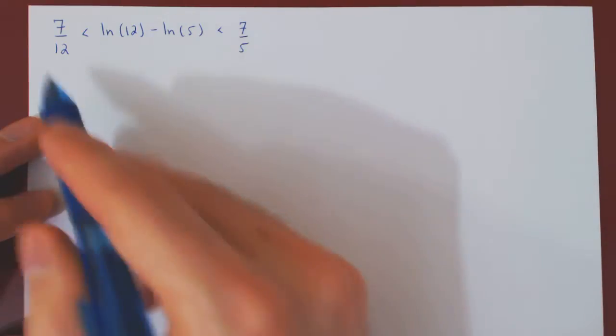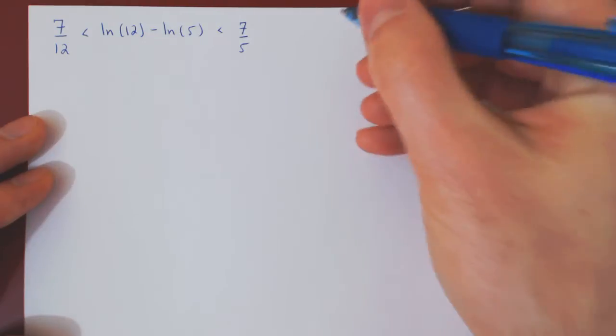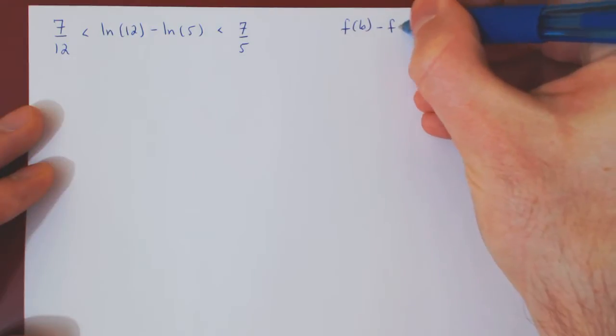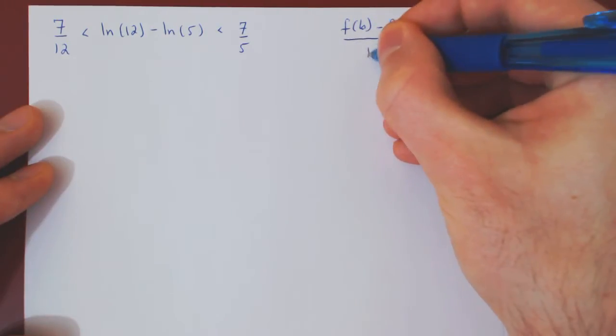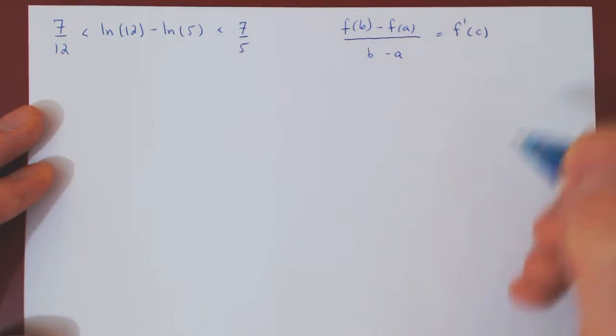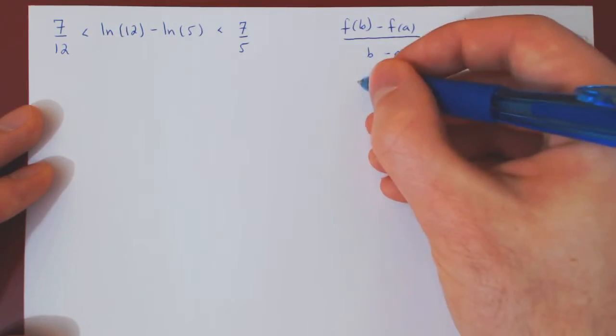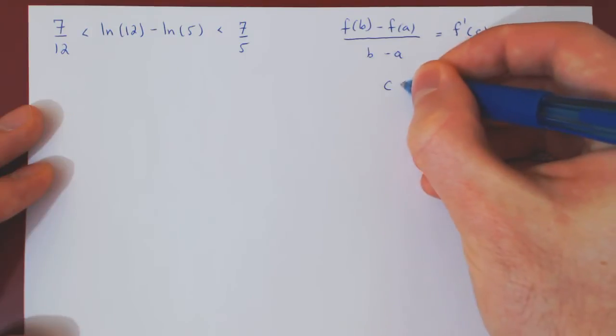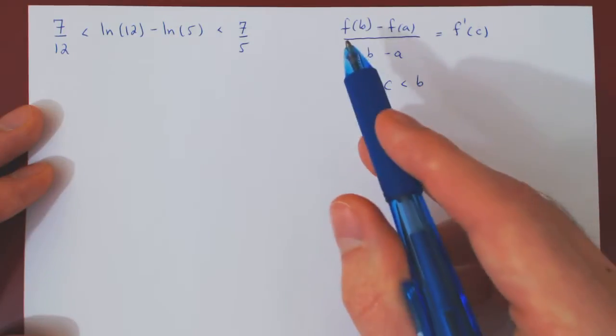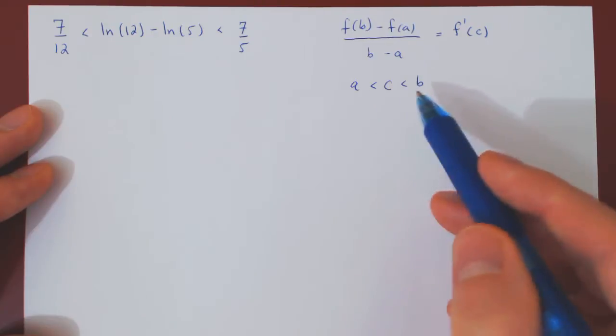So to see how we can go about this, let's just look at the conclusion of the mean value theorem. The conclusion is that f of b minus f of a over b minus a will equal to the derivative of f at some point c, where c of course lies between a and b. And the two assumptions are that f is continuous on the interval from a to b, and differentiable inside of the interval.